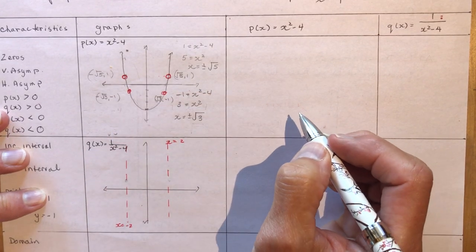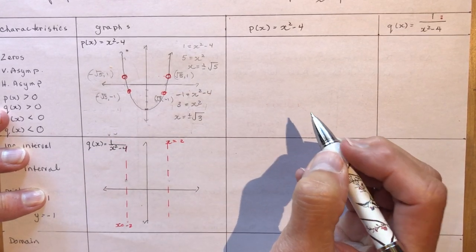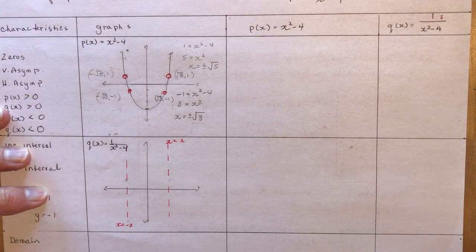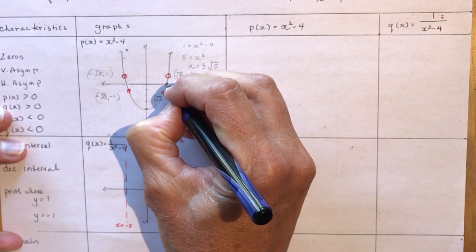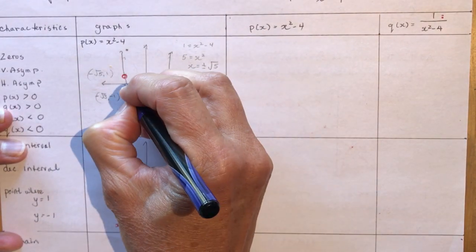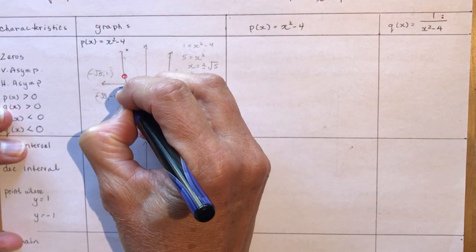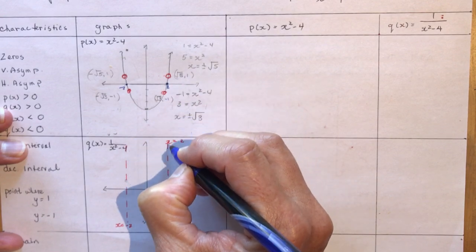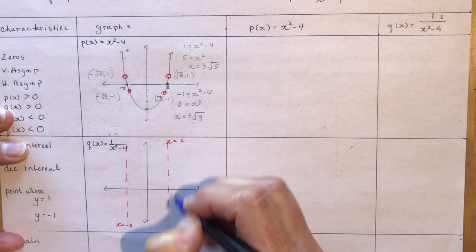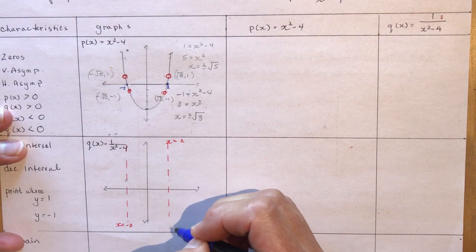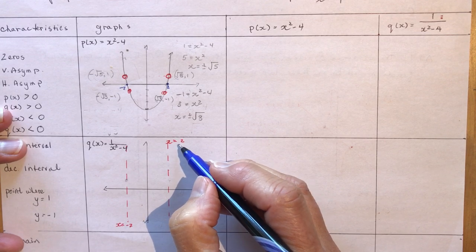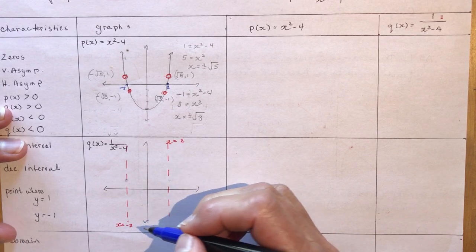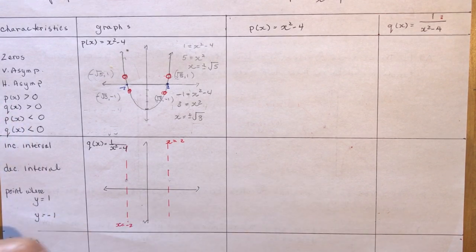When I go to sketch the reciprocal function, I first want to move those zeros of the function, which are plus and minus 2, down. I do a dotted line and write it right underneath, which helps you sketch the function better. So here's x equals 2 and x equals negative 2 — those are now my vertical asymptotes.